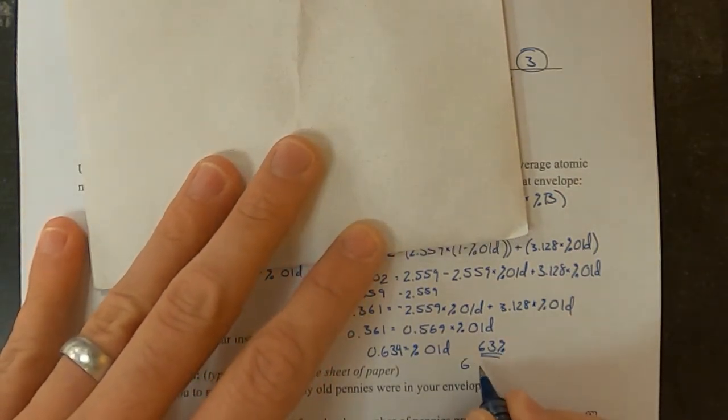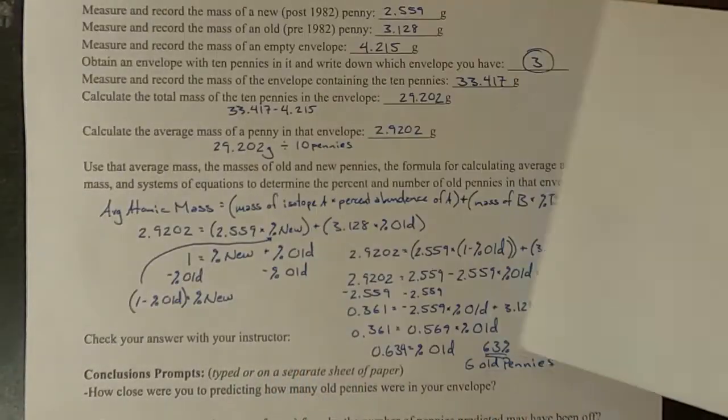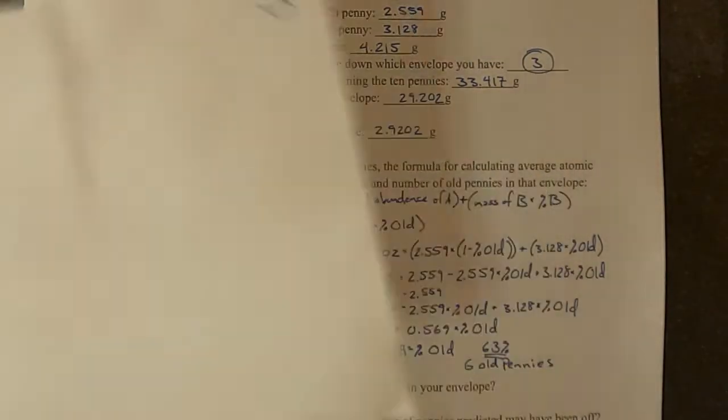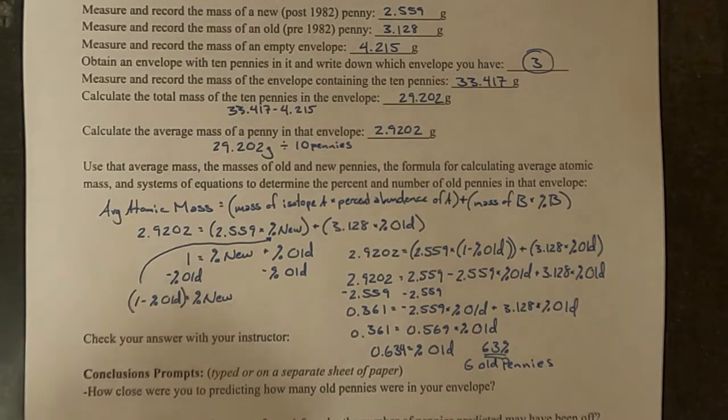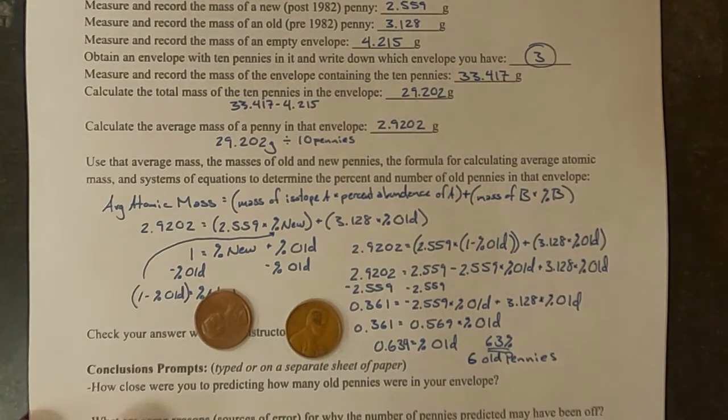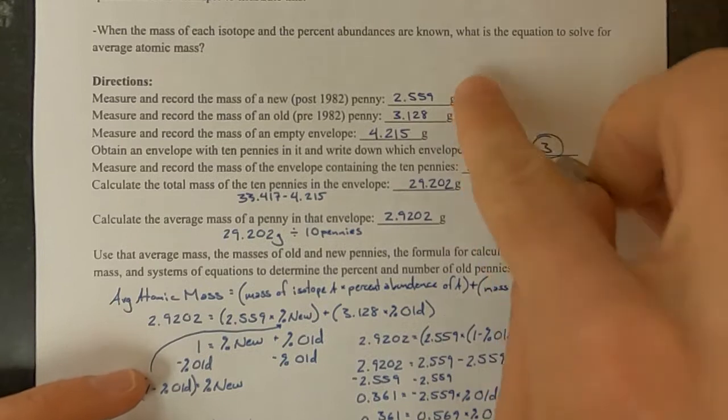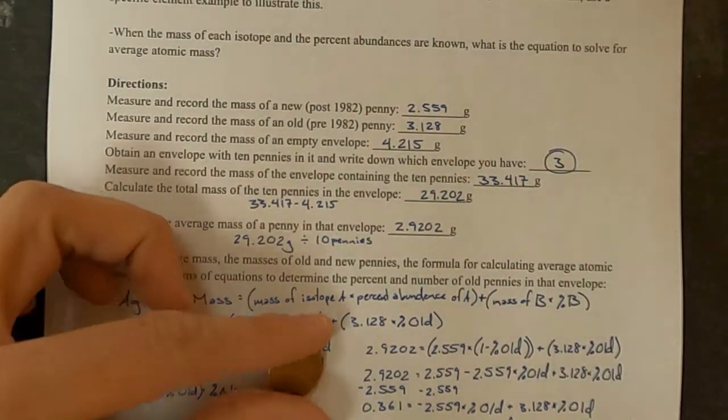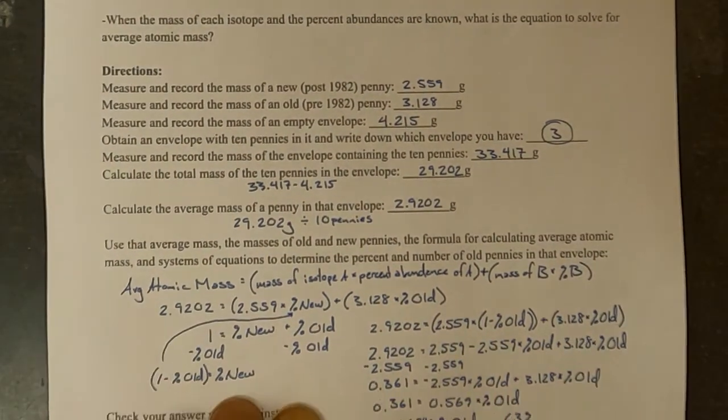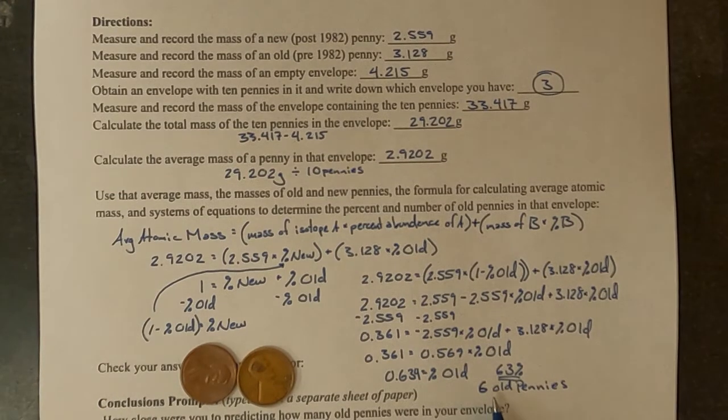And there are some reasons for that. We made some assumptions. We made the assumption that this envelope weighed the exact same as this envelope, which is not necessarily true. And while in real life atoms that are the same isotope would have exactly the same mass, we made the assumption that all pennies made before 1982 would have exactly the same mass, and that all pennies after 1982 would have exactly the same mass. But again, that is not true. And so those assumptions that we made were sources of error in this. So six old pennies after rounding and four new ones.